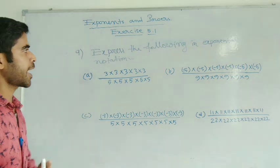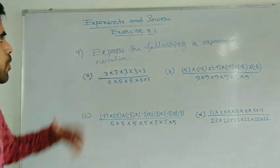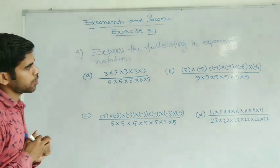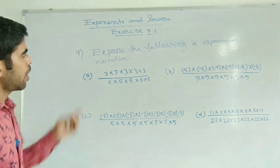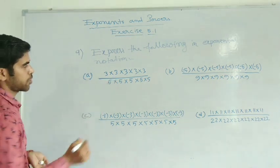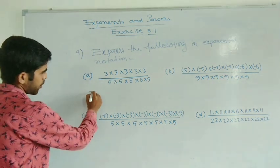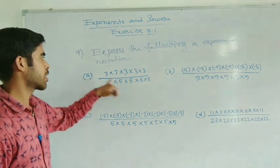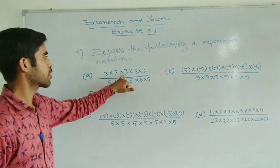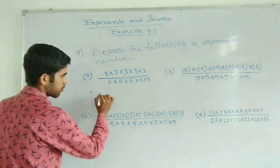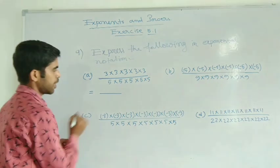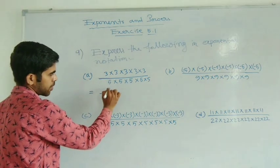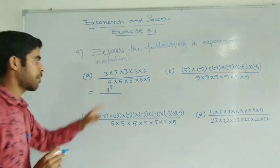Question 9: express the following in exponential notation. You know how to write exponential notation. Here just see how many things are there in the numerator: 1, 2, 3, 4, 5 — five things. So give one line and powering like 5.